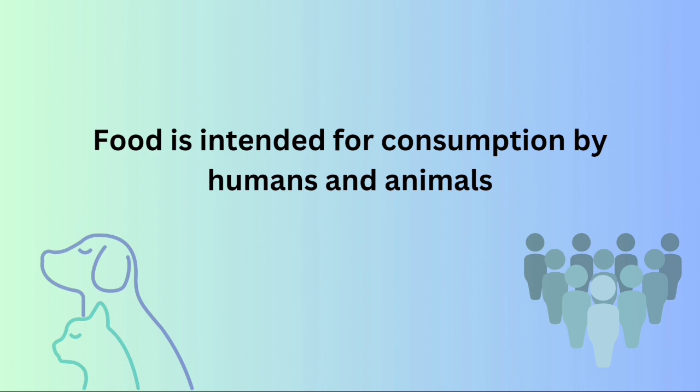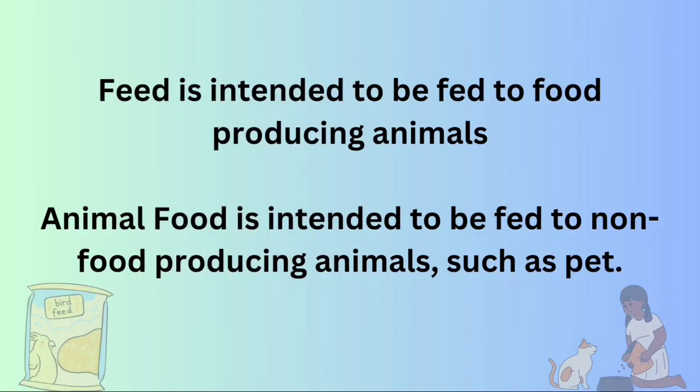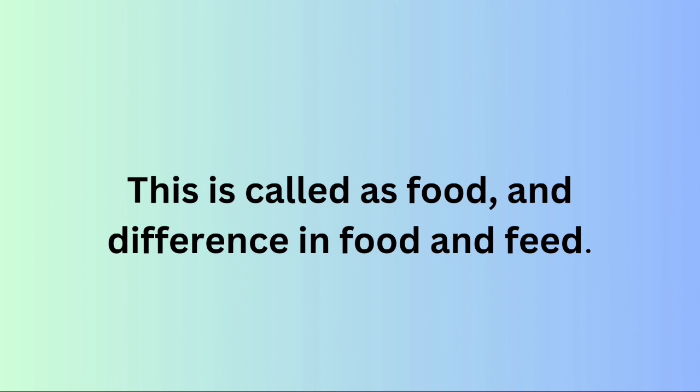Food is intended for consumption by humans and animals. Animal food includes food and feed. Feed is intended to be fed to food-producing animals. Animal food is intended to be fed to non-food-producing animals such as pets. This is the difference between food and feed.